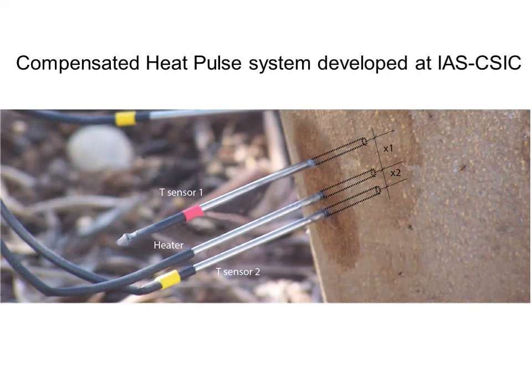In the compensated heat pulse method, we insert three needles into the tree: the central needle is a heater (a resistance), and two needles have temperature sensors at four depths. We apply a short pulse of heat, then follow the temperature variations above and below the stream of water. By analyzing these temperature variations after the heat pulse, we can deduce the sap flow going in the upward direction.